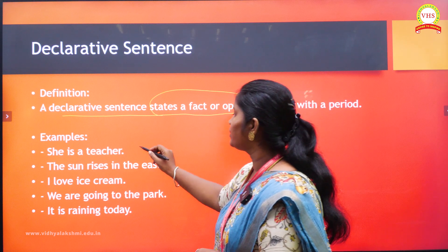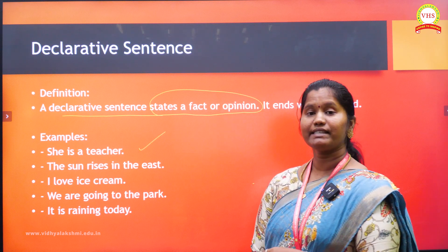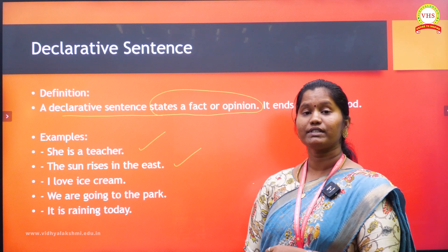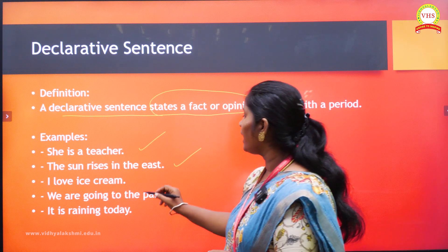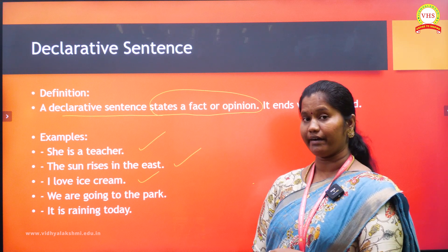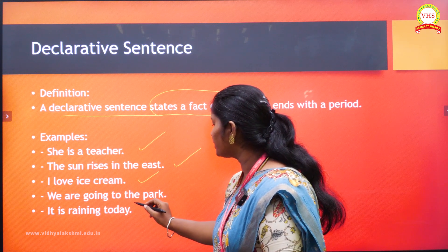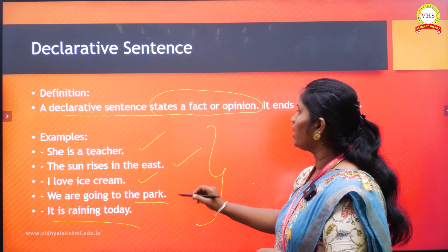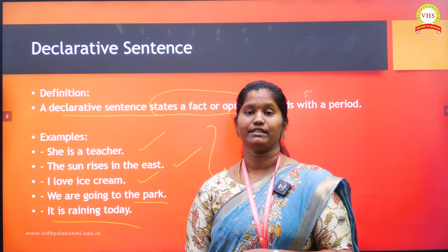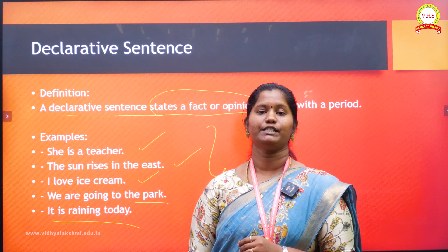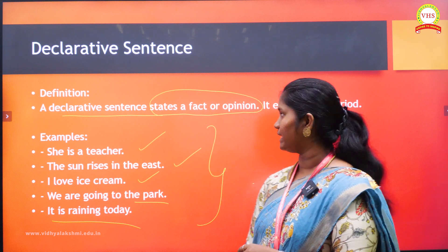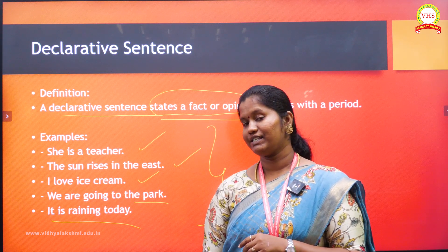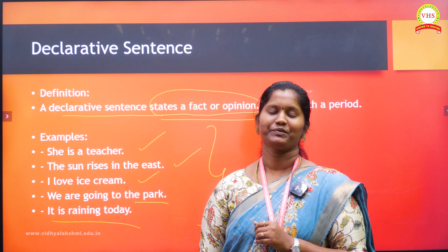Now see the examples. 'She is a teacher' — it states a fact. 'The sun rises in the east' — this also states a fact. 'I love ice cream' — it is an opinion. 'We are going to the park' and 'It's raining today.' So, these are examples of declarative sentences. A declarative sentence states a fact or opinion and it ends with a full stop.